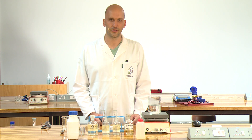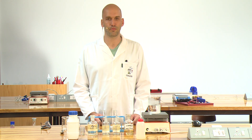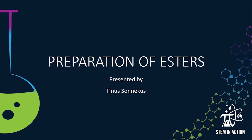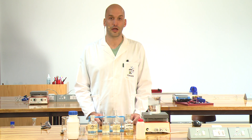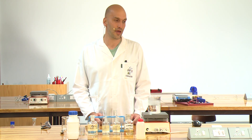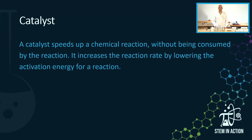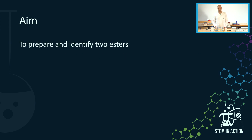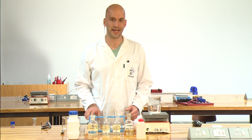Good day Great Dwarfs, I'm Tino Sonicas and as part of the Boost Series, we're going to prepare and identify two esters. The reaction between a carboxylic acid and an alcohol is known as esterification. We need a catalyst to speed this up — a catalyst speeds up a chemical reaction without being consumed by the reaction. It increases the reaction rate by lowering the activation energy. The aim of this experiment is to prepare and identify two esters.